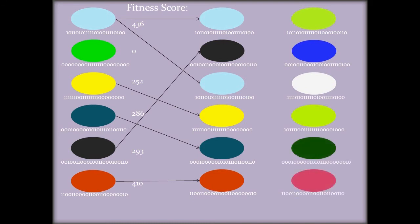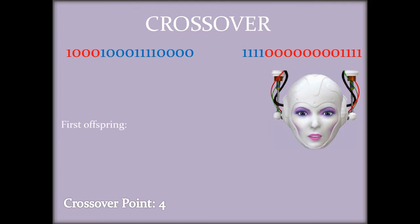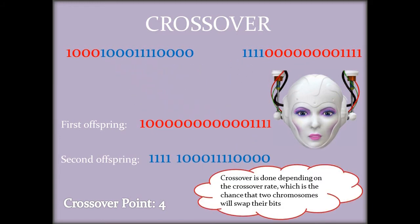What crossover is? Let's have a closer look to an example. These are the parent chromosomes. The simplest way to do this is to randomly choose a crossover point. Let's say that our crossover point is 4. The first offspring will take everything before this point from the first parent and everything after this point from the second parent. For the second offspring we do exactly the opposite. We take the first part from the second parent and the second part from the first parent. With crossover we hope that the new chromosomes will have the good parts from their parents and therefore better solution.